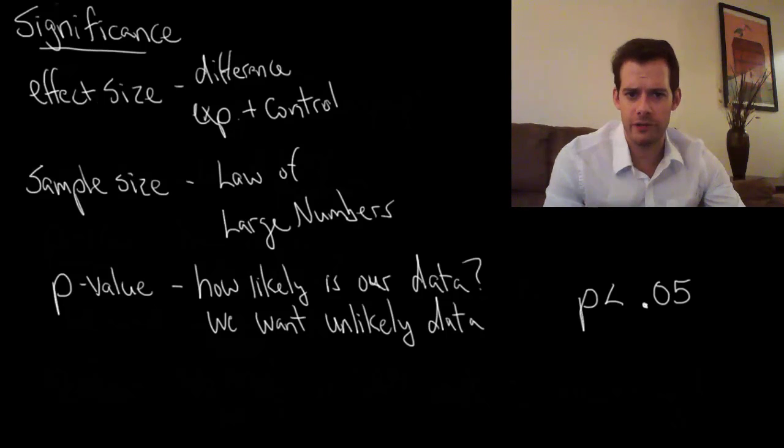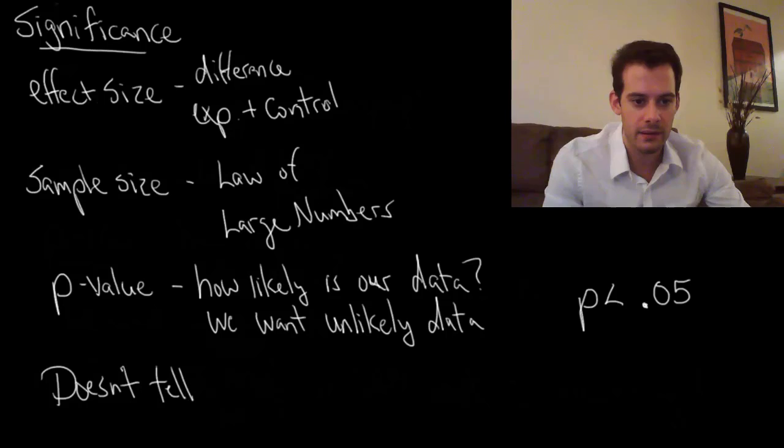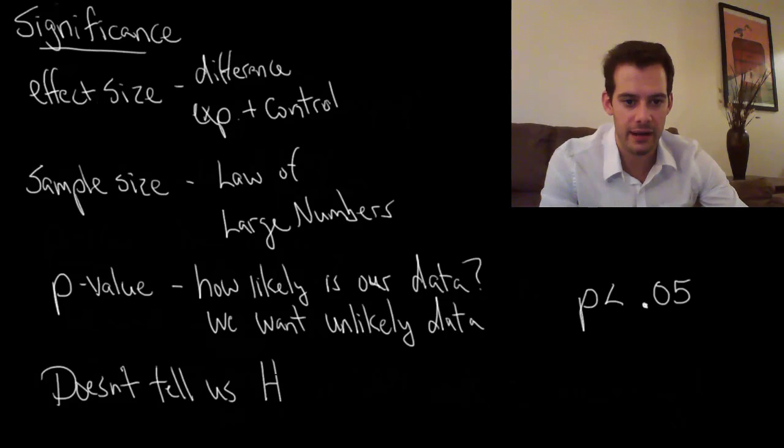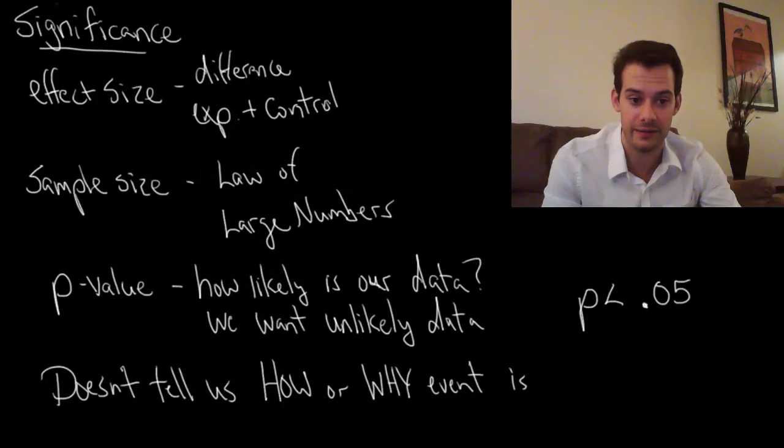This is a really important point for thinking about significance. The p-value tells us that the data is unlikely but it doesn't tell us how or why the event is occurring. It just tells us it's a very unlikely event to observe.